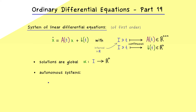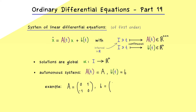The term autonomous simply tells us that the two functions A and b are constant. This makes everything much simpler, because we only need one matrix and one vector for the whole system. Let's look at an example where we have a 2 times 2 matrix: A equals (0, 1; -1, 0) and B equals (1, 1). What we get is a vector field from R^2 to R^2 on the right-hand side, which means we could look at the directional field, and in this case it's easy to visualize because it's a picture in R^2.